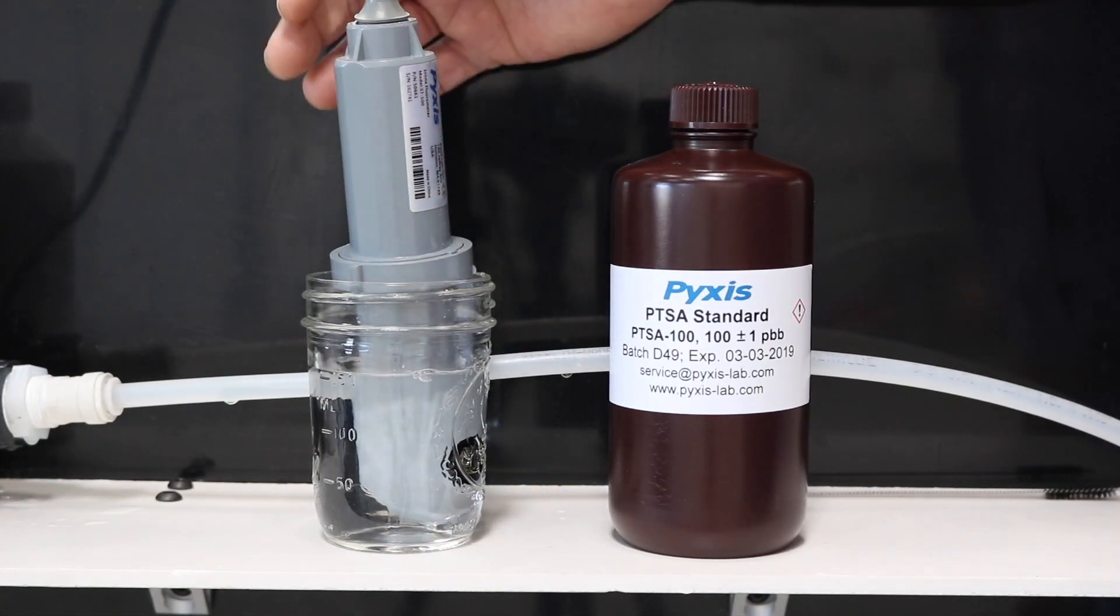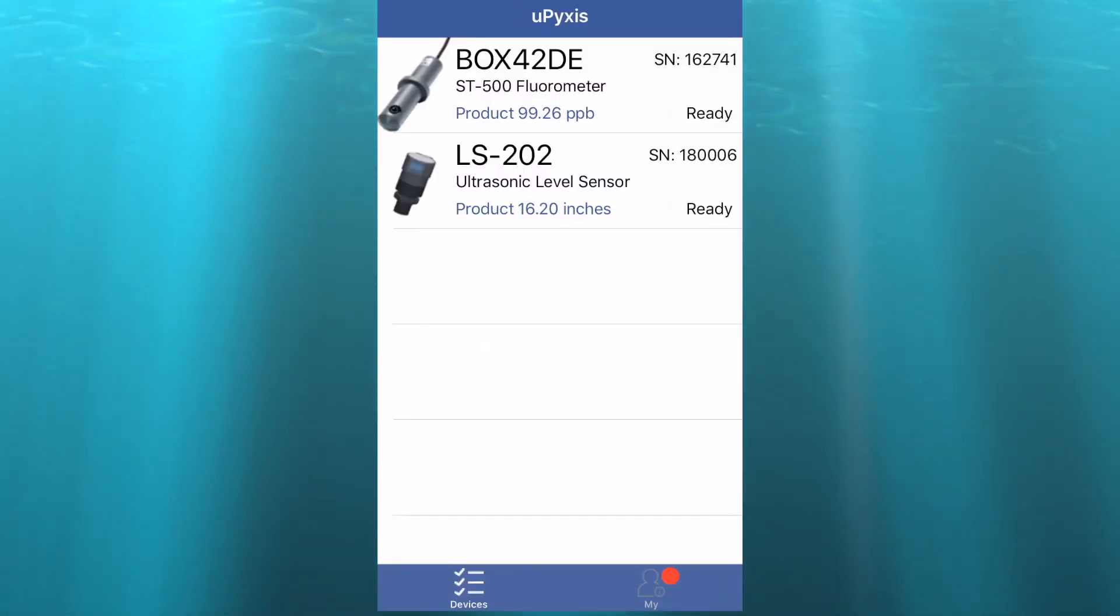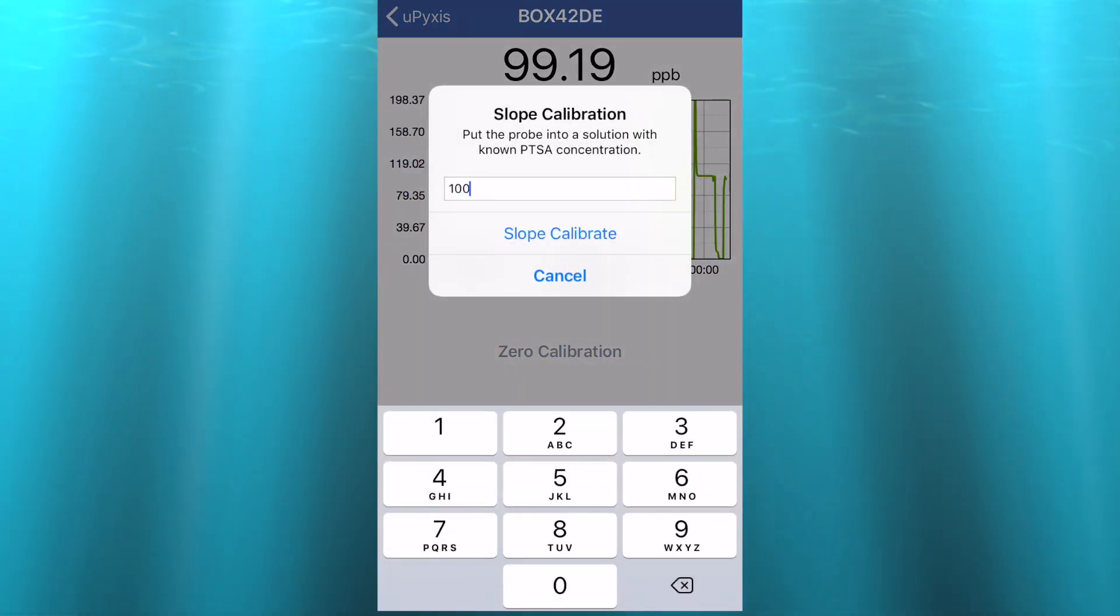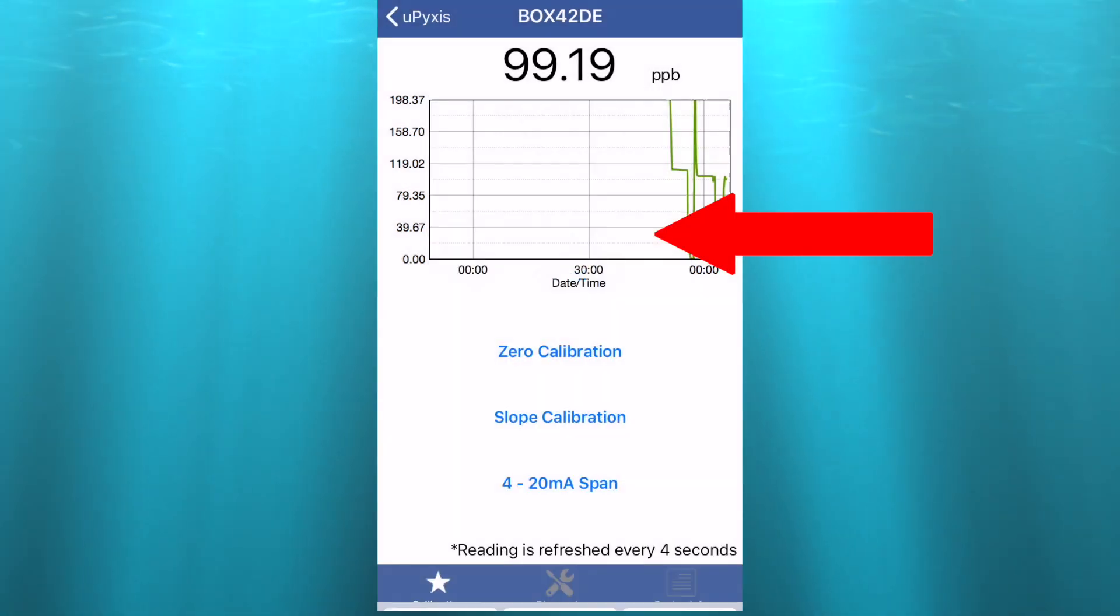Now place the probe into Pixis PTSA standard 100 calibration solution. Then on the uPixis app, select slope calibration and enter 100. Then select slope calibrate.